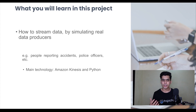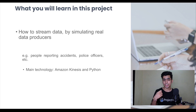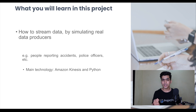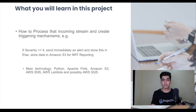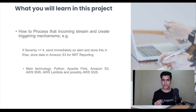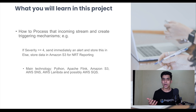First, we need streaming data that simulates real-time behavior. Like stock market data where transactions happen every second, or Amazon where new orders are created every second, we'll build a similar mechanism. The main technology is Amazon Kinesis and Python. Second, we need to process incoming data and create a triggering mechanism — writing an ETL job so that whenever new data arrives, it automatically triggers the transformation job. Technologies used here include Python, Apache Flink, and S3.